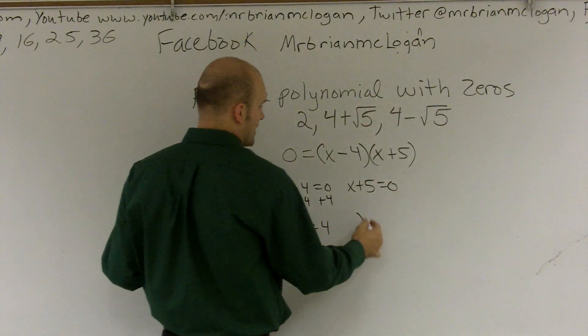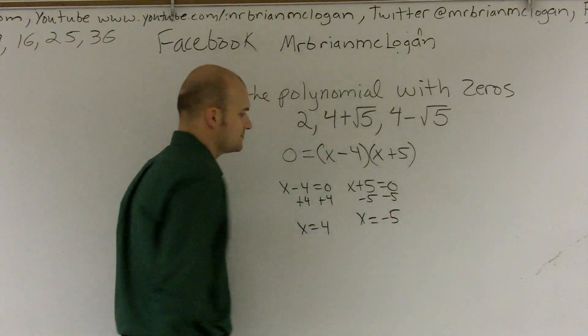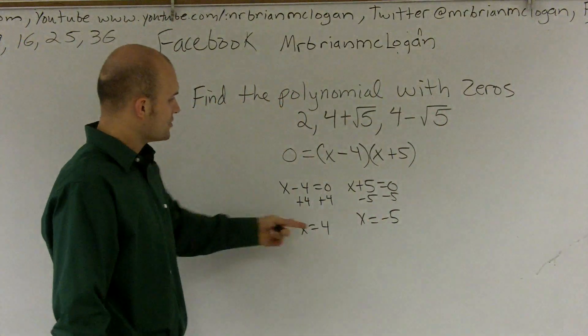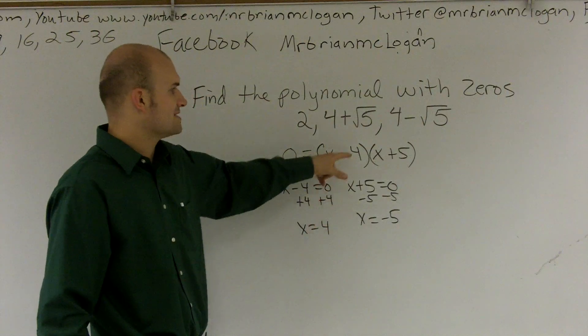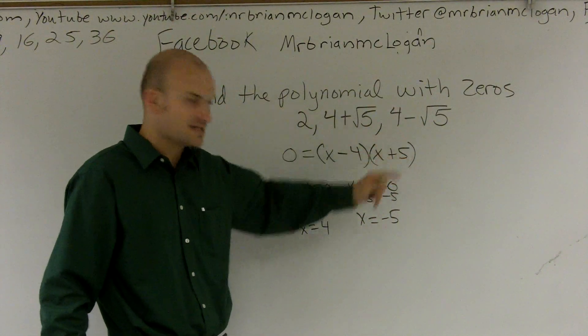So you get x equals 4, and you subtract 5 on both sides, you get x equals negative 5. Then you say the zeros is 4 and the zero is negative 5. So you go from 4, and then when you write it as a linear factor, it becomes negative 4. And when you write it as negative 5, it becomes a positive 5.